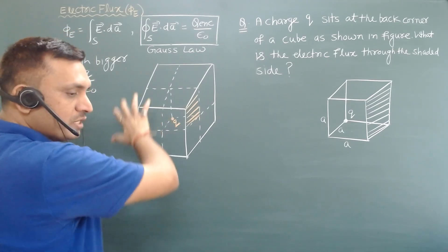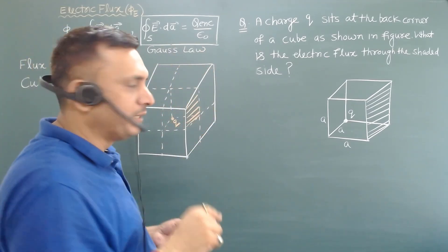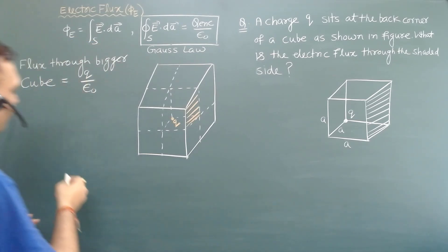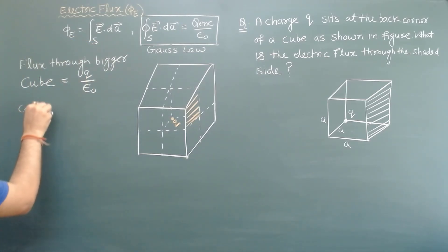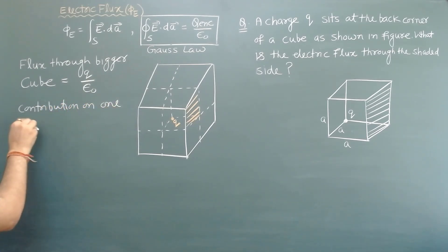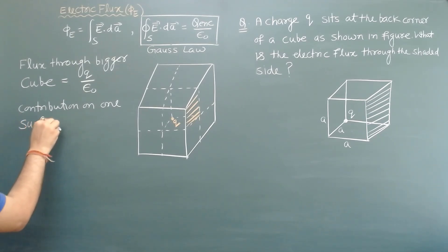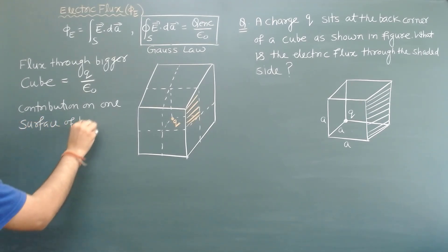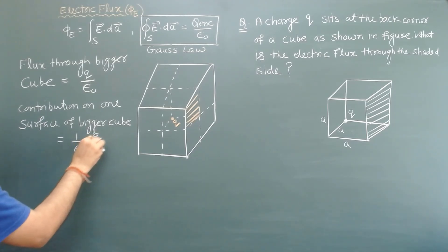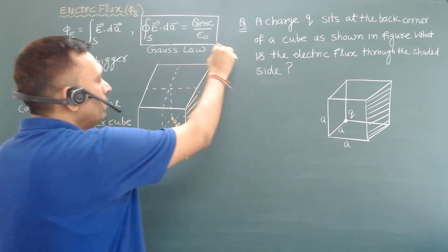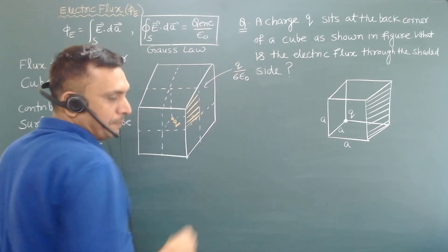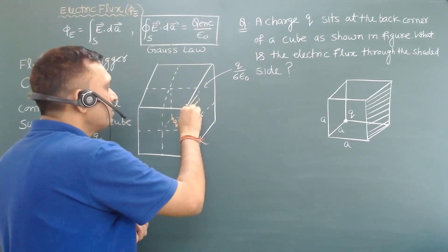Now, since charge q is symmetrically placed at the center of the bigger cube and the bigger cube has six surfaces, the contribution to one surface of the bigger cube will be 1/6 of q by epsilon naught. So the flux through one face is q divided by 6 epsilon naught. But we need the contribution to this particular shaded surface only.